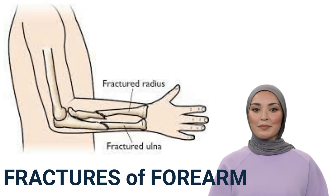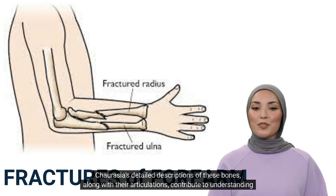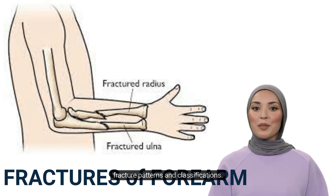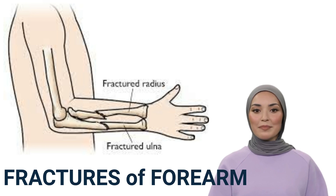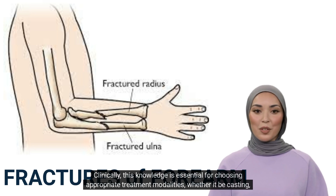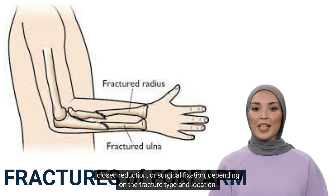Fractures of the Forearm: Forearm fractures are common and often involve the radius and ulna. Chaurasia's detailed descriptions of these bones, along with their articulations, contribute to understanding fracture patterns and classifications. Clinically, this knowledge is essential for choosing appropriate treatment modalities, whether it be casting, closed reduction, or surgical fixation, depending on the fracture type and location.